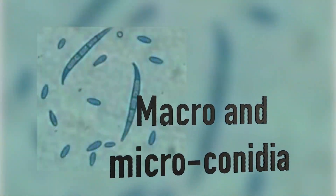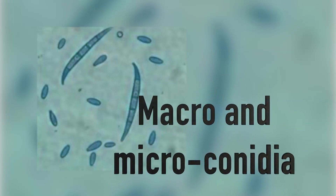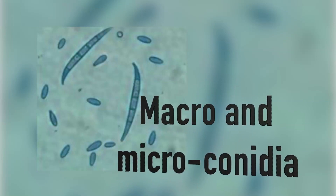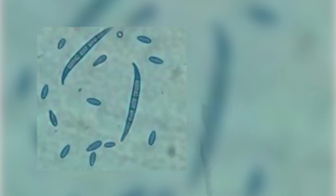Fusarium oxysporum special form cubense — FOC, as it is known — reproduces by macro and microconidia. Macro and microconidia are very important structures of infection within the plant and for pathogen dispersion.